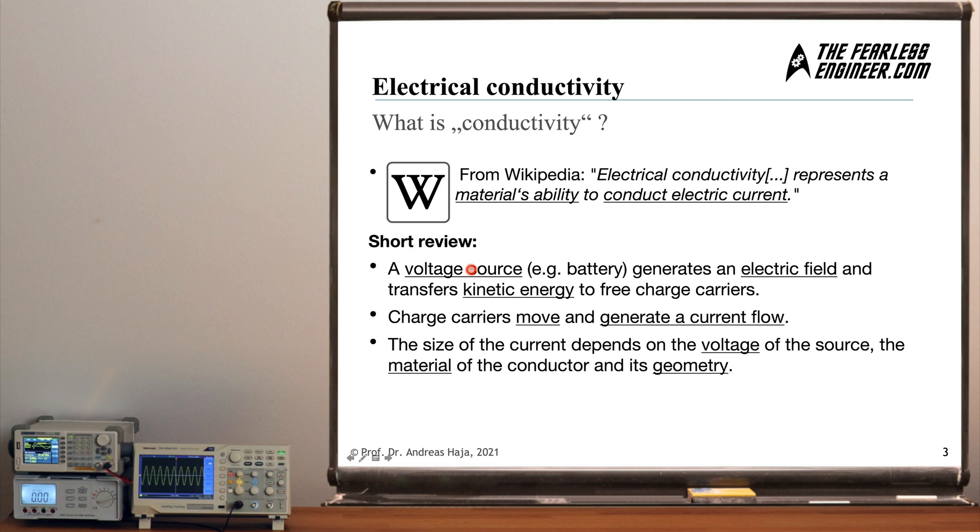We have seen in previous videos that a voltage source, which might be for example a battery, generates an electric field and through this field, kinetic energy is transferred onto charges. Those become moving charges which move into the direction of the field or if it's negative charges they move against the field. And these charge carriers, when they move, they generate a current flow. This is what we perceive as electric current. Moving charges with a constant velocity in a certain direction which is driven by the electric field.